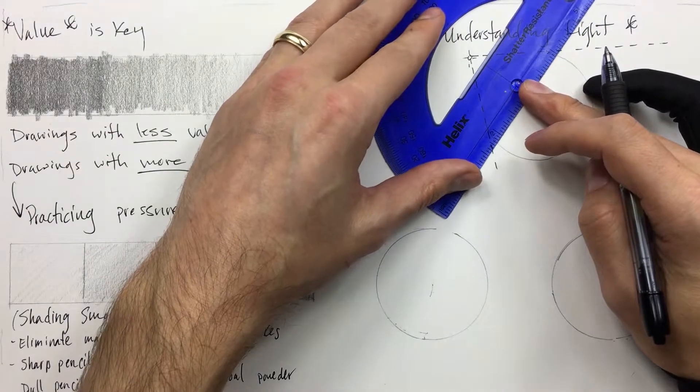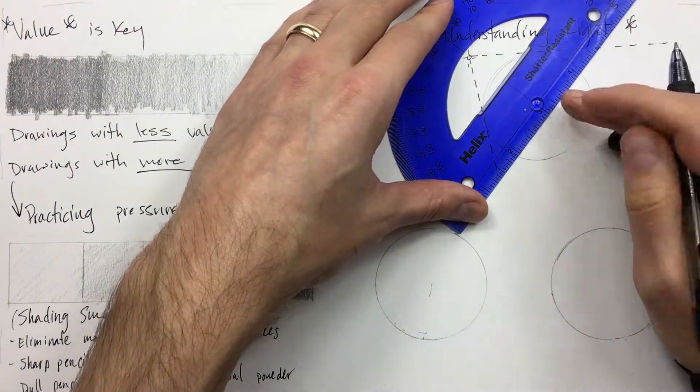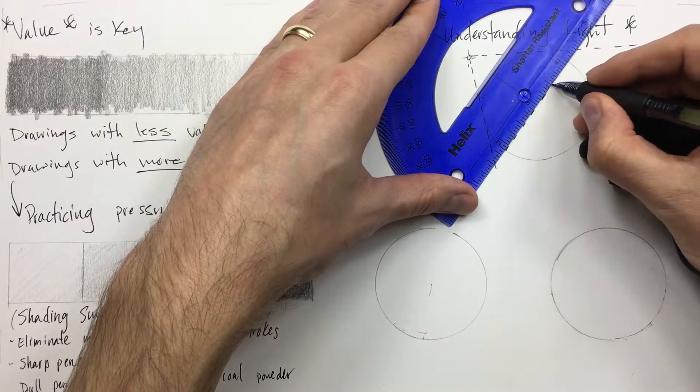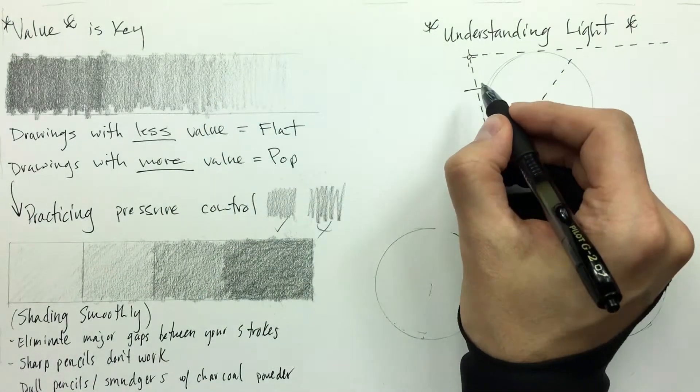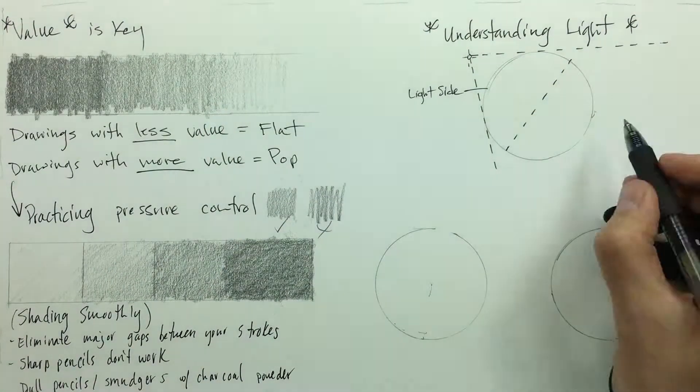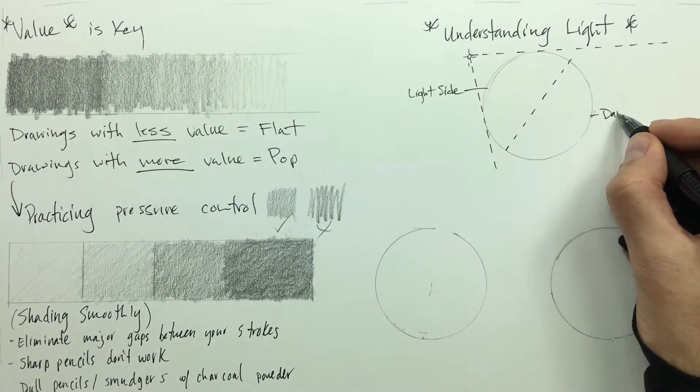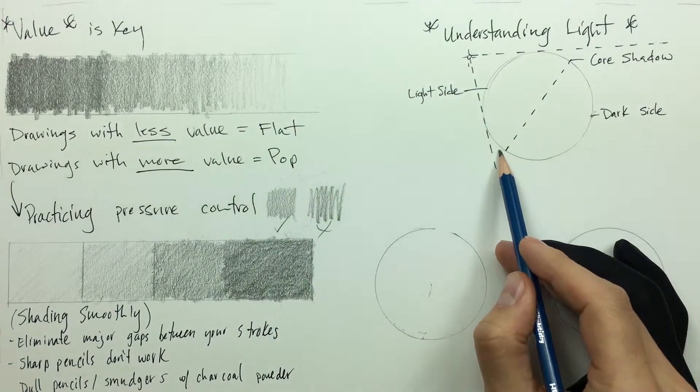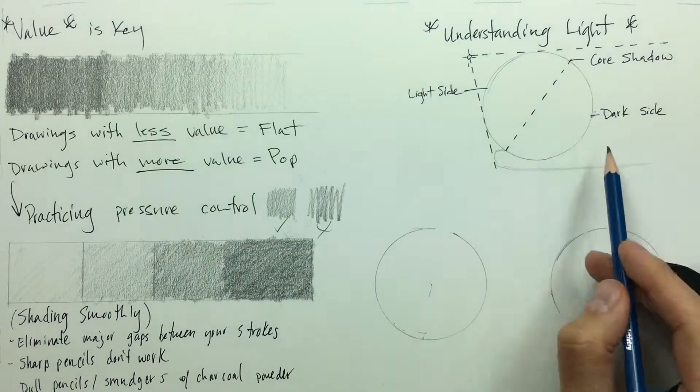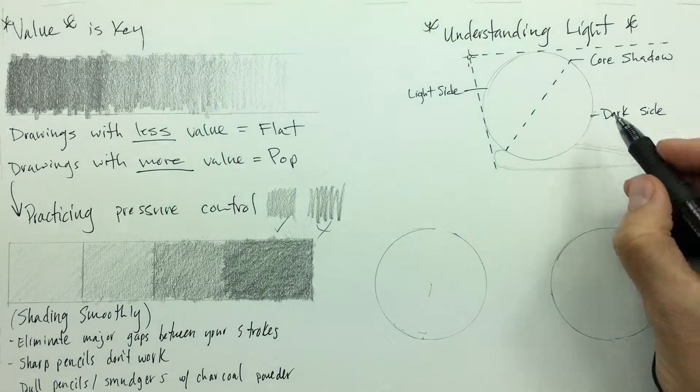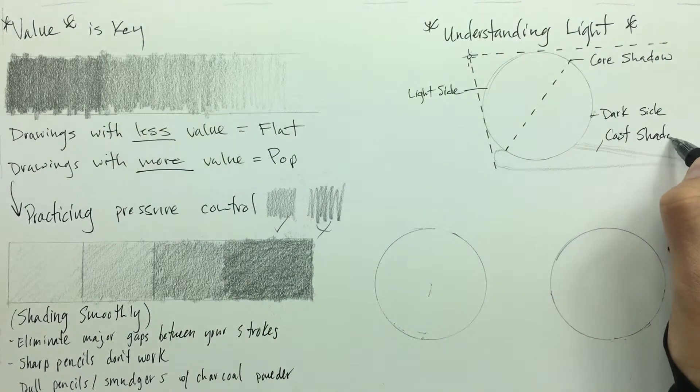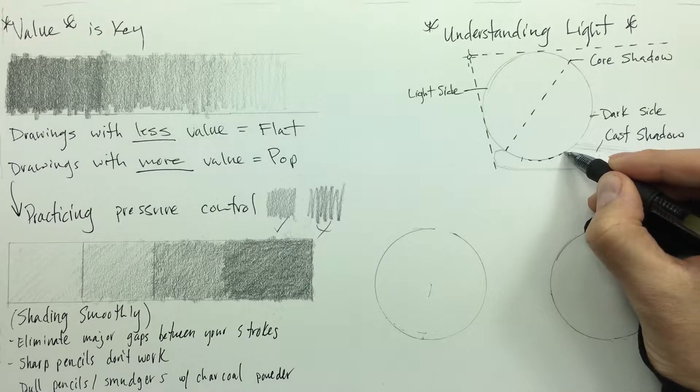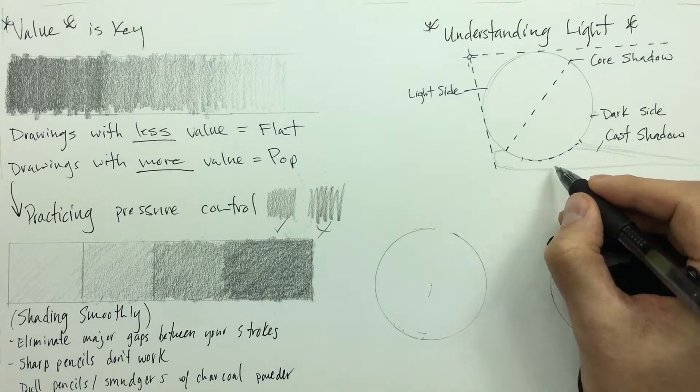Then what we're going to do is find the center line of this circle. The side that faces the light source is going to be the light side, and the side that faces away is going to be the dark side. The line that we just made across the center of the circle is going to be what is known as our core shadow. Then here is going to be our cast shadow, and in between the circle and the cast shadow is going to be what is known as an occlusion shadow.